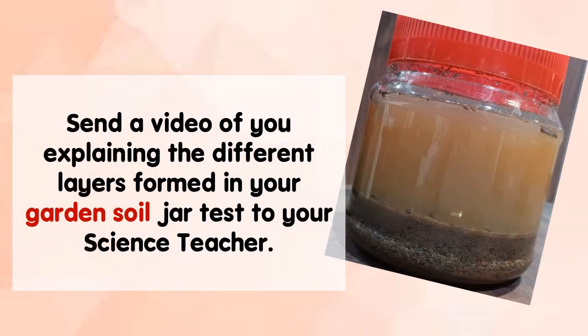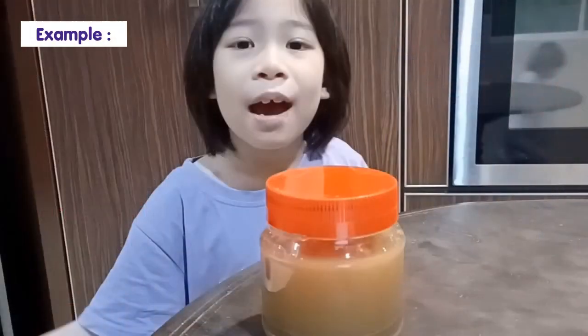Can you name each layer? Based on your observation, I want you to fill in the blanks and name the type of soil in the jars based on the soil jar tests you have conducted. You may fill in this page once the water starts to clear and you are able to see the different layers appearing. I want you to send a video of you explaining the different layers formed in your garden soil jar test to your science teacher. This is an example for you using the sand jar test — she will be explaining the different layers formed.